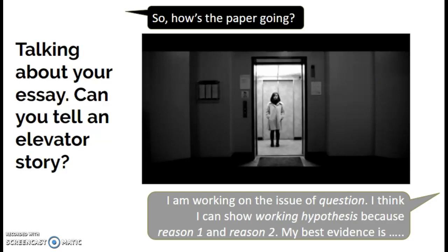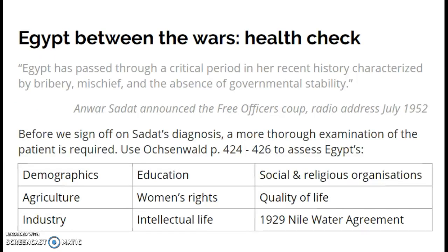Finally, a little health check: Naguib gives this assessment of Egypt as he takes over with the Free Officers in 1952, that Egypt has passed through a critical period characterized by bribery, mischief, and the absence of government stability. ASD students can go to Oxenwald in the Google Drive to see how these things impacted life in Egypt between the wars. This video should help you prepare for two slightly different essays, give you ideas for content and thesis statements to answer such questions. Hope that helps — thanks for watching.